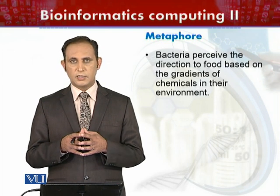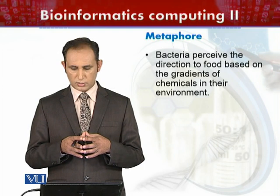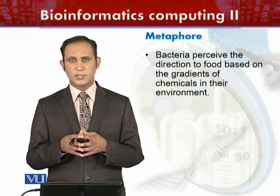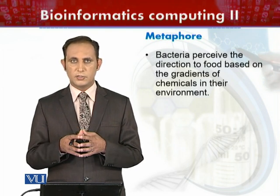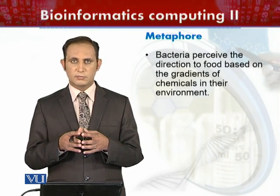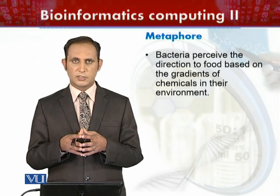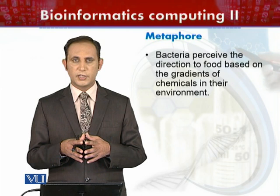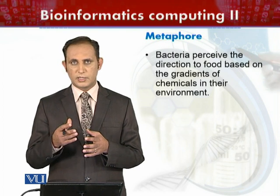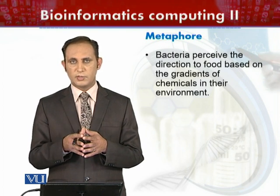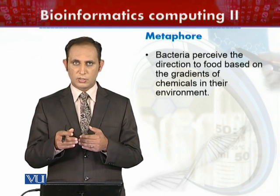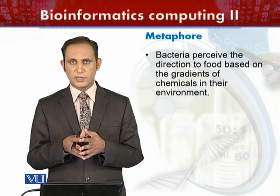Bacteria basically perceive the direction of food based on the gradients of chemicals in their environment. Food may also be considered as a type of chemical in this specific scenario. It is the gradient of those chemicals which is perceived by bacteria in their environment, and the bacteria will logically decide whether to move towards that food or not.